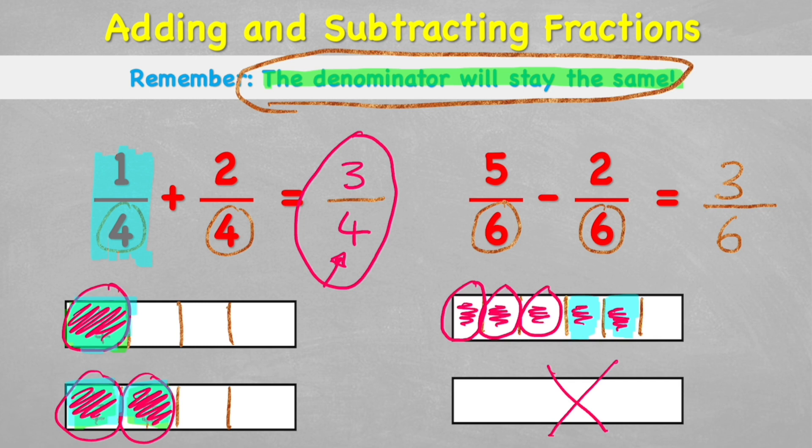Now, some bright sparks among you will start to notice that all we're doing really is keeping the denominator the same. And if I'm working in sixths, I end up with sixths. And then I'm just using the operation on the numerator. Five subtract two equals three. Let's see if that works for the first one. We kept the denominator the same as a four. And then I just did one plus two equals three. So it's actually super simple.